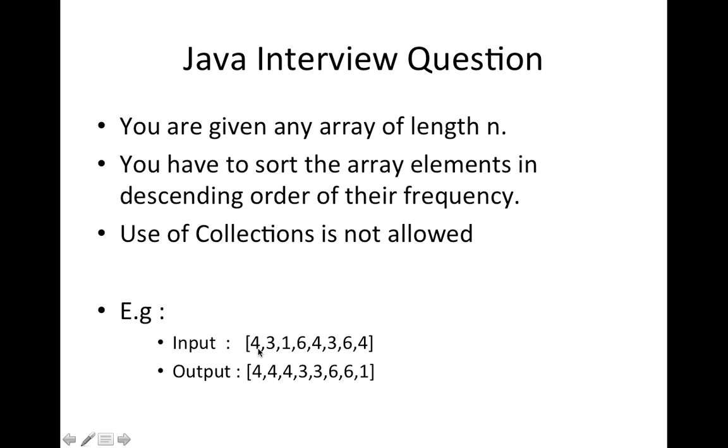Let's say you have this array [4,3,1,6,4,3,6,4]. What we need to do now is sort this array based on the frequency of each number. If you talk about 4, it appears 1, 2, and 3 times, so it appears 3 times. Then we have 3 appearing 2 times, so it will be double 3. Then we have 6 appearing 2 times, so it will be 6, 6. And we have 1 which appears once. So we have to sort the elements depending upon the frequency.